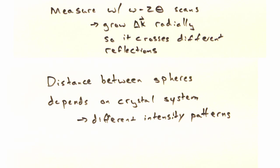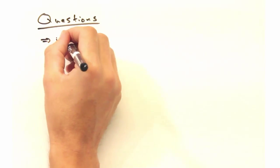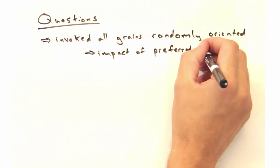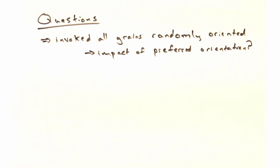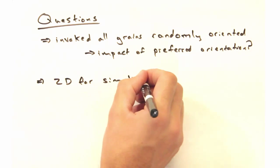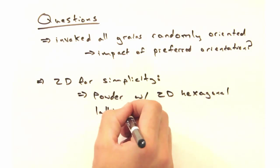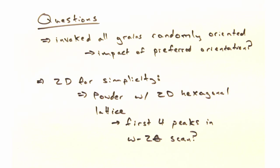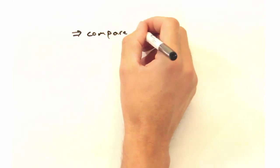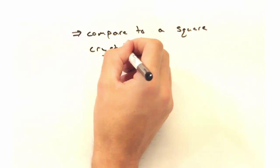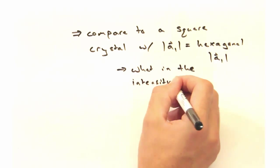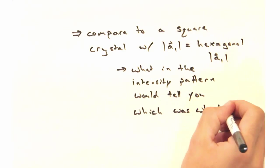Before we leave, we have a few questions for you to consider at home. We invoked at the beginning that all the crystal grains in a powder were randomly oriented. But suppose a significant amount of the grains were oriented in one direction — how would that manifest itself in the intensity spectra? Second, for a powder with a 2-D hexagonal crystal structure, can you identify the first four peaks to occur in an omega-2-theta scan? Additionally, suppose you had a powder with a square crystal structure, where the lattice constants for both the square and hexagonal systems were equal. What in the intensity pattern would tell you which was which?